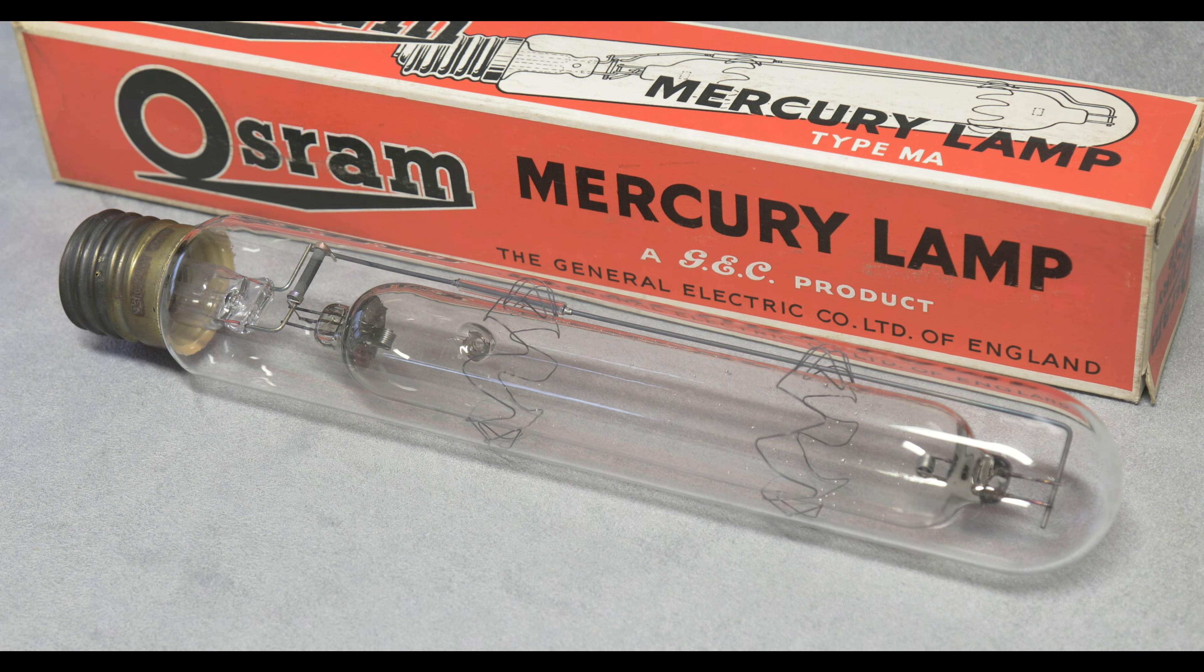What this is is an Osram GEC 400 watt medium pressure mercury vapor lamp. It kicks out about 16,000 lumens, color temperature of 5,400 Kelvin, and a very poor color rendering index.